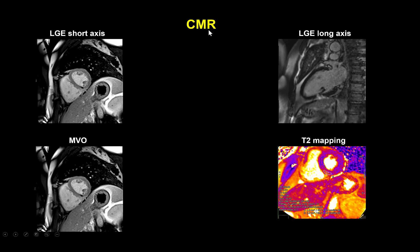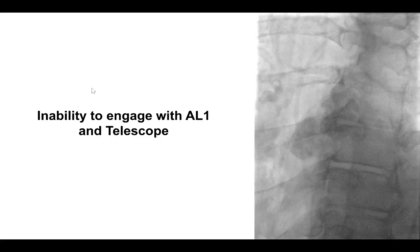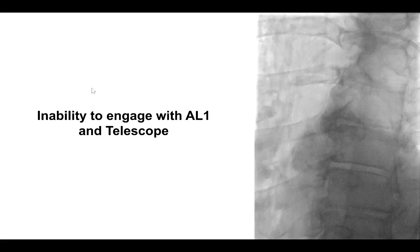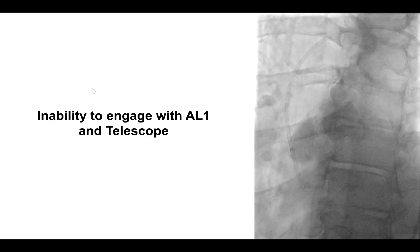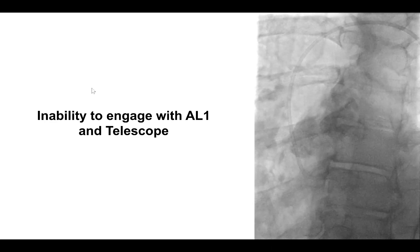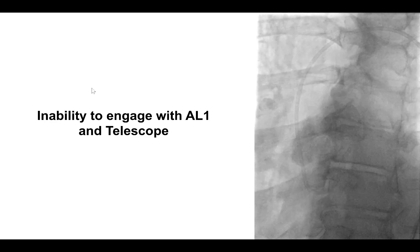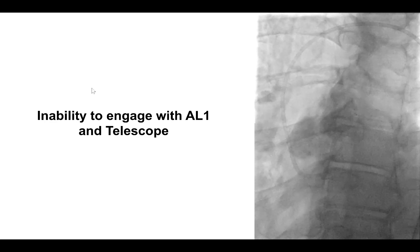Cardiac MRI was also performed. That was very useful because it showed that there was a small area of infarction and edema, but the majority of the inferior wall was viable. Based on that, the patient was referred for attempting percutaneous coronary intervention of the anomalous right coronary artery.